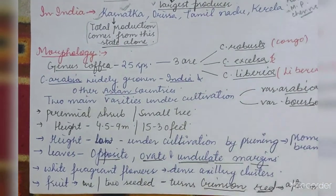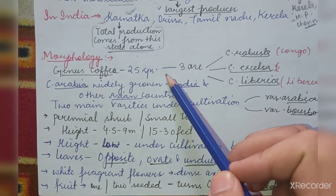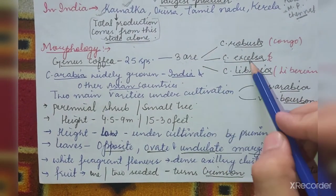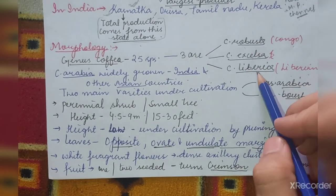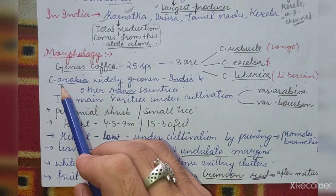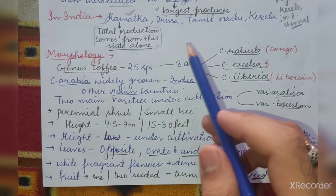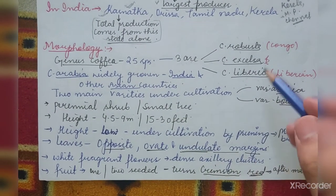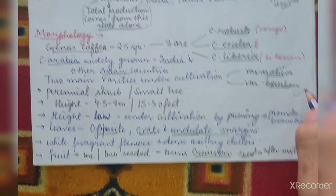Regarding morphology: the genus Coffea has 25 species. Among these, three important ones to remember are Coffea robusta (from Congo), Coffea excelsia, and Coffea liberica. Coffea arabica is the most widely grown species in India and other Asian countries. Under cultivation, there are two main varieties: the Arabica variety and the Bobbin variety.